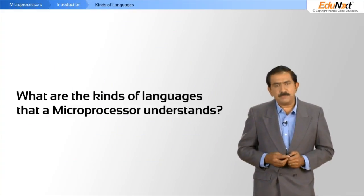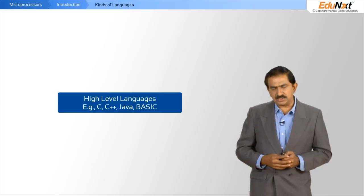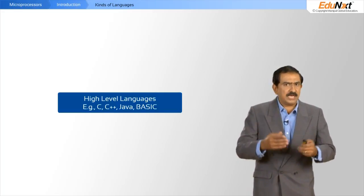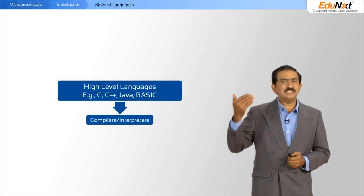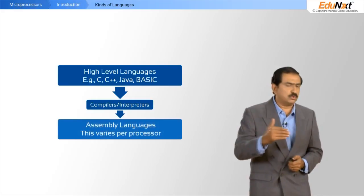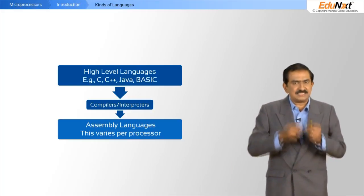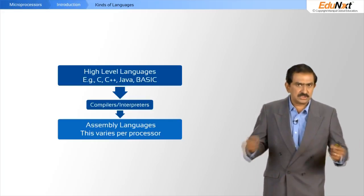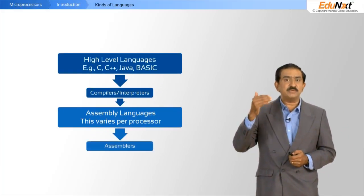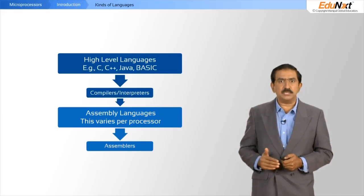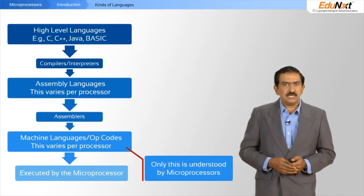The last piece I would like to cover is the kinds of languages that a processor can understand. At the top you have high-level languages — C, C++, Java, and so on — which many of you would be familiar with. But these languages are not something the processor can understand. You need to compile or interpret them, which brings you down to assembly level languages. Assembly level languages are very processor-specific — the 8086 has its own assembly language that cannot be understood by processors from other manufacturers. The assembly language itself must then be assembled by an assembler to produce what is called machine code or op codes, and it is these that are understood by the processor.